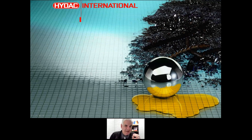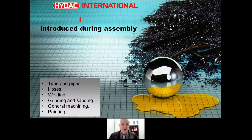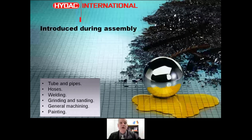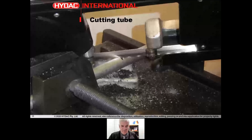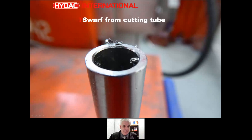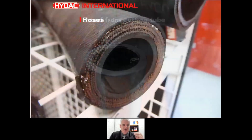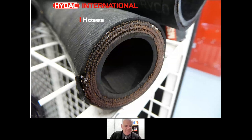A lot of contaminants in the system can be introduced during assembly through tubes and pipes, hoses, welding, grinding, sanding, general machining, and painting. We're going to be cutting tube — there's a lot of swarf involved. It's absolutely critical that these large chunks of steel are excluded from our system. The same is true with hoses. Hydraulic hoses can sometimes comprise as much steel as a similar size tube or pipe, so as we cut them there's a lot of steel released into the hose.